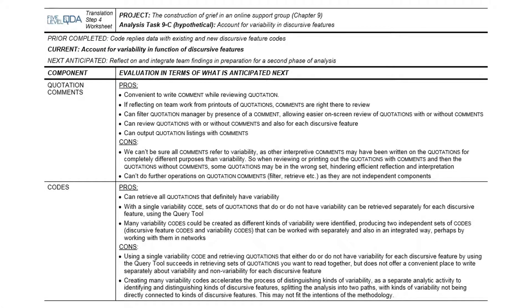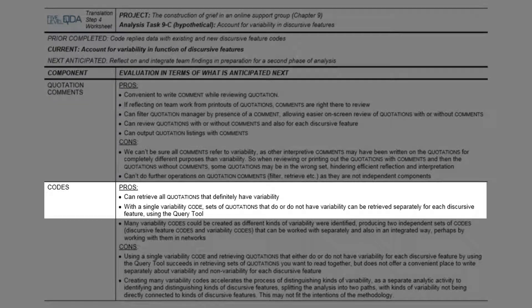Another possibility is not just writing notes about variability in the quotation comment, but tagging the quotations that have some variability with a single variability code. This is the choice that we have already seen demonstrated by Trina in the actual project. This choice allows all the quotations with variability to be easily retrieved. And if we use the query tool, then all the quotations not tagged with the variability code can also be retrieved as a separate set.